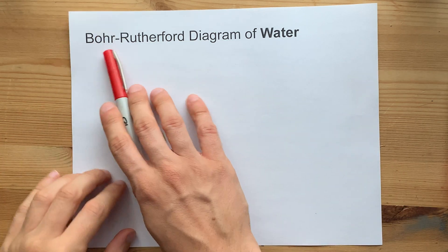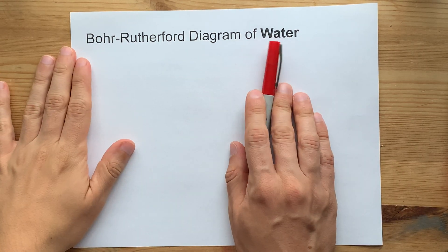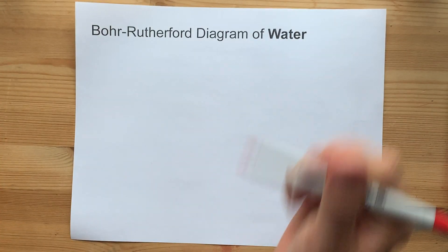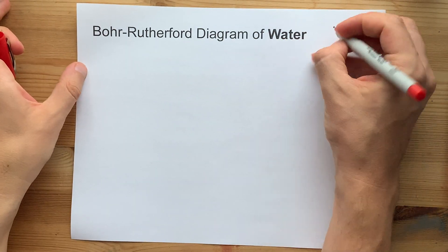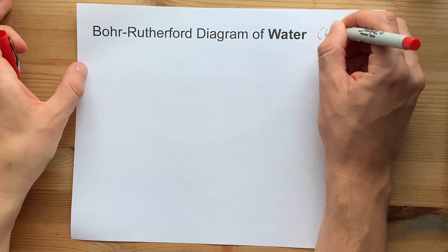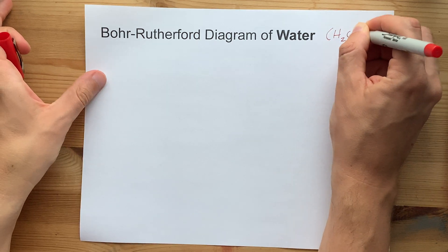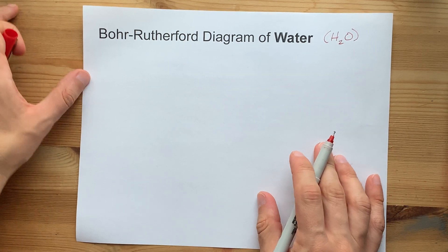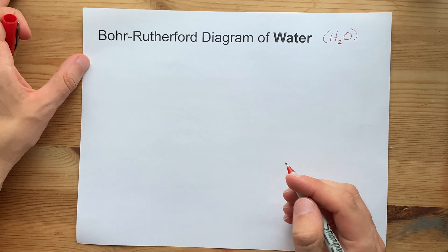I've been asked a few times for the Bohr-Rutherford diagram of a compound like water and not just a single element. It helps to know what the chemical formula of that compound is. For example, water is H2O, meaning there are two hydrogens and one oxygen atom in that molecule.